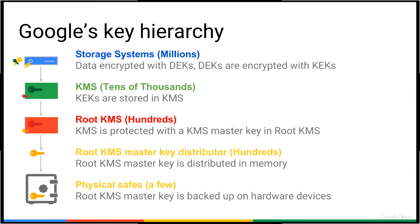At the top you see the boxes in blue — those are our storage systems. The numbers in parentheses are the number of tasks at that layer, so there are millions of processes implementing the storage systems. A layer down is the KMS I'm going to talk about — tens of thousands of those. A layer below that is the root KMS, and below that is a distribution system for the root KMS master key, with a few hundred of those.